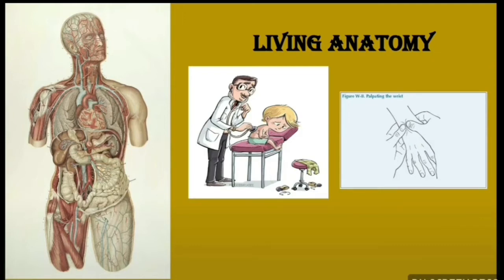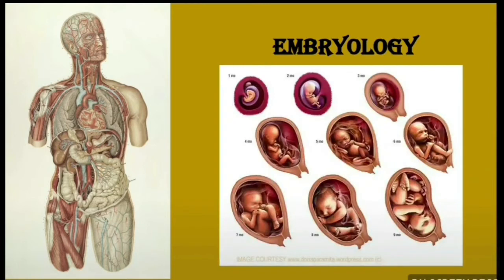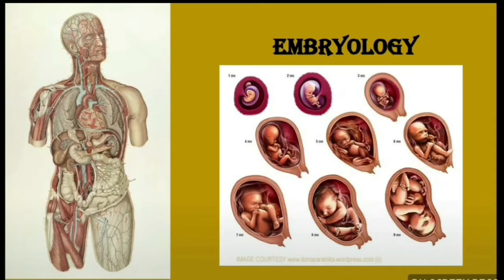The next subdivision is embryology — the study of prenatal development and developmental changes in an individual. It is the study of a baby still developing inside the womb of a mother. Embryology has two types: developmental history, called ontogeny, and evolutionary history, called phylogeny.